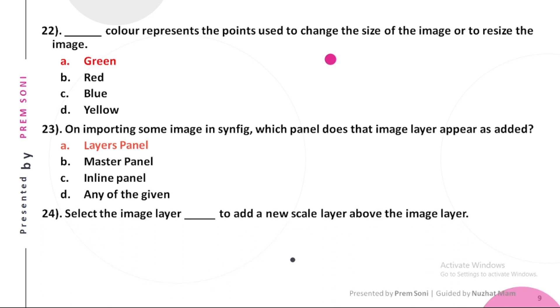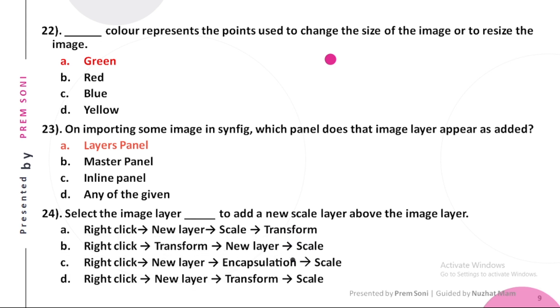Twenty-fourth, select the image layer. Dash to add a new scale layer above the image layer. Options are: a. Right click, new layer, scale, transform, b. Right click, transform, new layer, scale, c. Right click, new layer, encapsulation, scale, d. Right click, new layer, transform, scale.